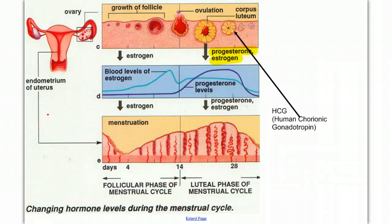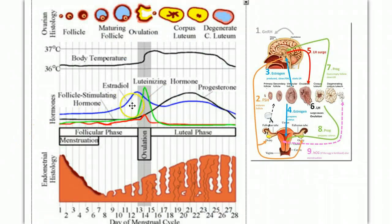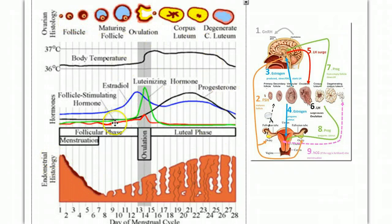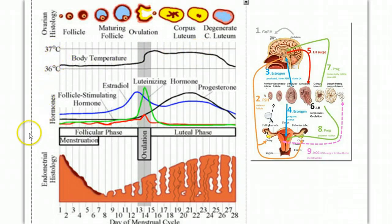Let's look at that again with a different picture. In this chart, we see all four hormones on one graph, so it may be more helpful. We can also see what's happening at the ovary and what's happening at the uterus, all in one picture. We also see a slight change in body temperature during ovulation, maintaining through the luteal phase, but it's less than one degree, so it's not that big of a deal.